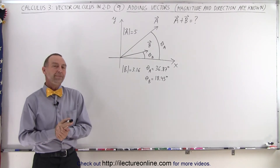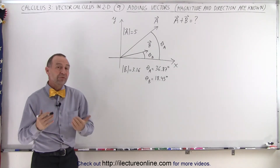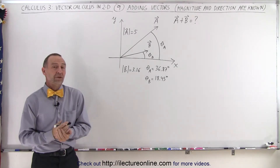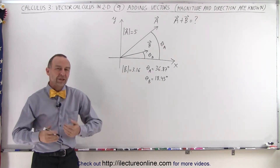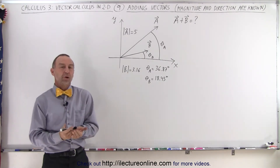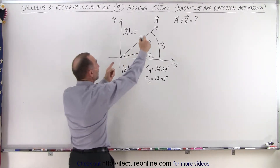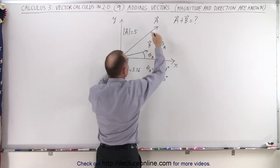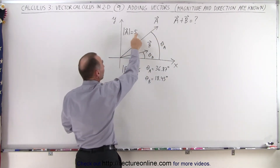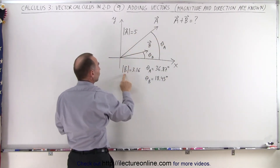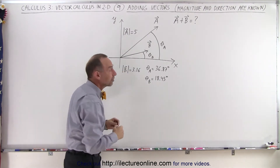Welcome to our lecture online. What if you want to add two vectors together, but only their magnitudes and their directions are known? In other words, you know how long each vector is — the magnitude of each vector. The magnitude of vector a is 5, and the magnitude of vector b is 3.16.